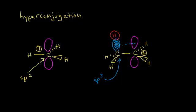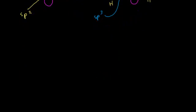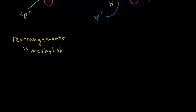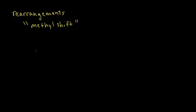Carbocations are important because they can rearrange in mechanisms. There are two possible rearrangements we'll discuss. The first type is called a methyl shift. If you're doing a mechanism involving a carbocation and one of your intermediates looks like this — with a methyl group and this carbon bearing a positive one charge — sometimes students have trouble identifying carbocations because the hydrogens aren't drawn in.